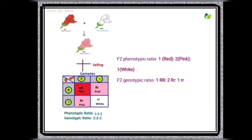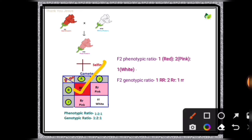The F1 hybrid does not resemble either parent. Looking at the Punnett board, in the F2 progeny one red-colored flowered plant, two pink-flowered plants, and one white-flowered plant are obtained in the ratio of 1:2:1. The genotypic and phenotypic ratios are the same for incomplete dominance — 1:2:1 — with two heterozygous plants having the genotype capital R, small r.